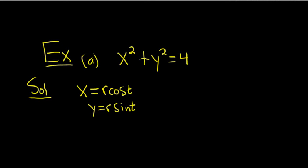And we can check that this works. So in this case here, r is the square root of 4, so that's 2. And so if you plug in 2, you would get x equals 2 cosine t. And then y equals 2 sine t.